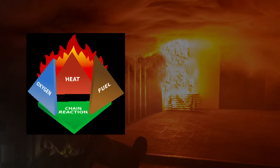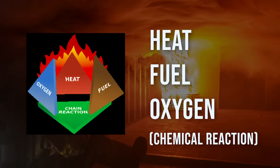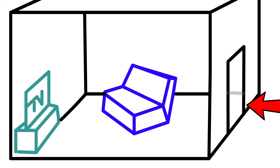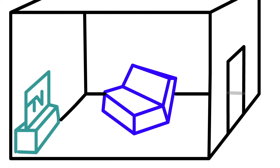Flashover is no different to any other fire in that it relies on a combination of heat, fuel, oxygen, and a chemical reaction. Thinking about it in these terms makes flashover easier to understand. The fuel is coming from the couch, the TV, the carpet, the walls, and those kinds of things. The oxygen is already present in the room when the fire starts — it's coming from the air already present and from air being drawn in through the door as the fire burns.